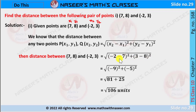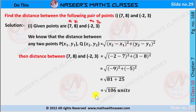Here, minus 2 minus 7 is equal to minus 9, and 3 minus 8 is minus 5. Then minus 9 all squared is 81, and minus 5 all squared is 25. 81 plus 25 is 106. Therefore, the distance between the given points 7 comma 8 and minus 2 comma 3 is square root of 106 units.